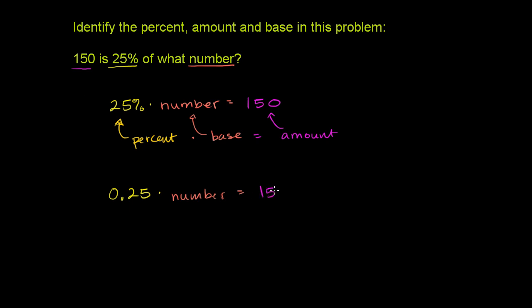And one interesting thing is just to think about, should that number be larger or smaller than 150? Well, if we only take 25% of that number, if we only take 25 hundredths of that number, if we only take 1 fourth of that number, because that's what 25 hundredths is, or that's what 25% is, we get 150. So this number needs to be larger than 150. In fact, it has to be larger than 150 by 4.